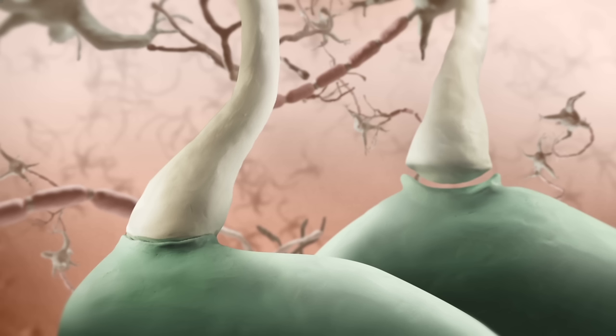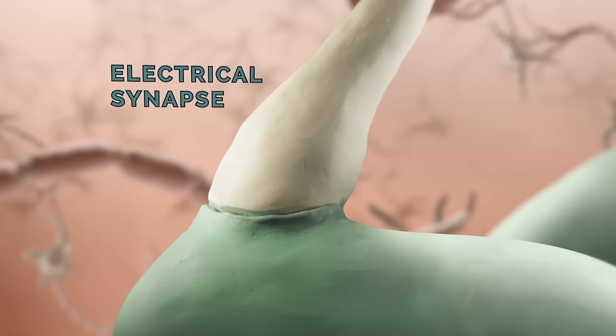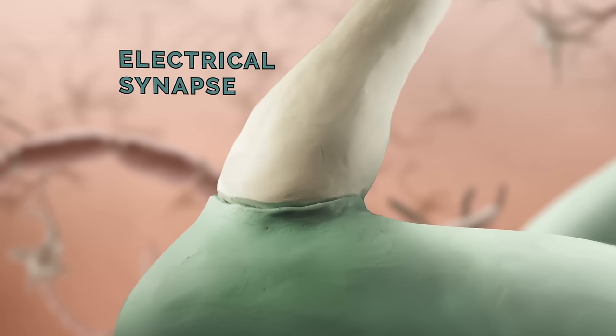There are two general types of synapses, electrical synapses and chemical synapses. Electrical synapses are less common in our own nervous systems, but they're simpler to think about, so let's start with them.